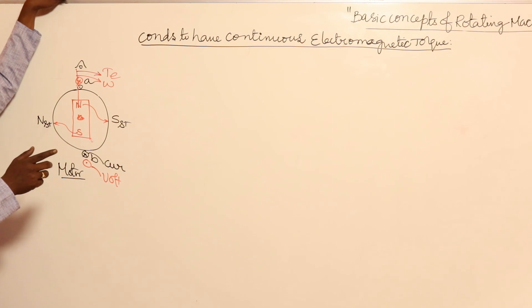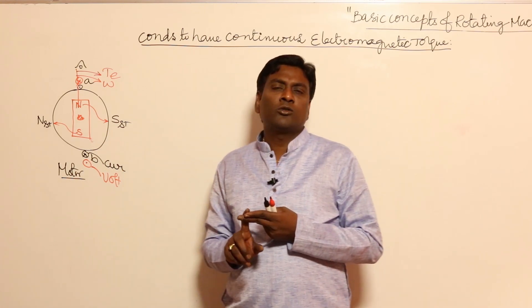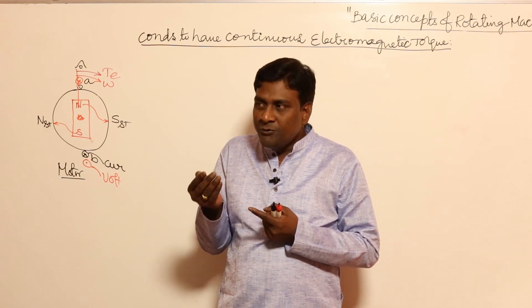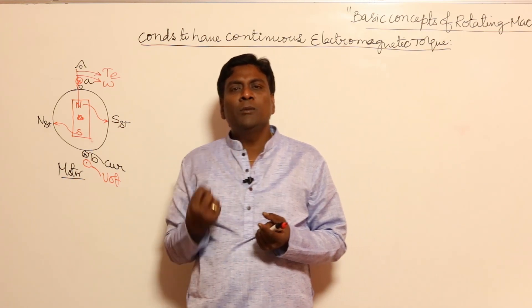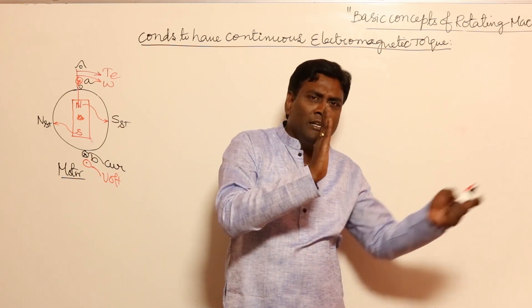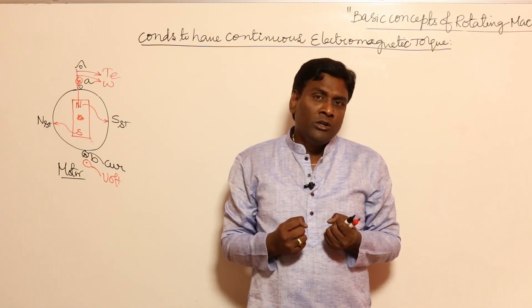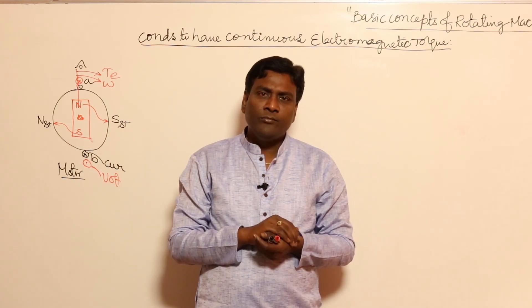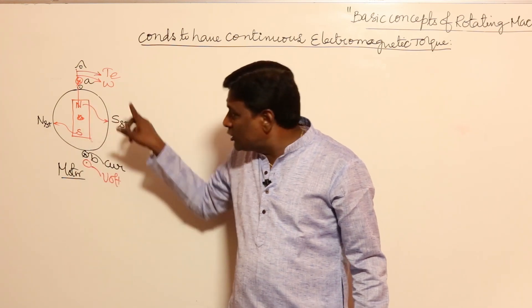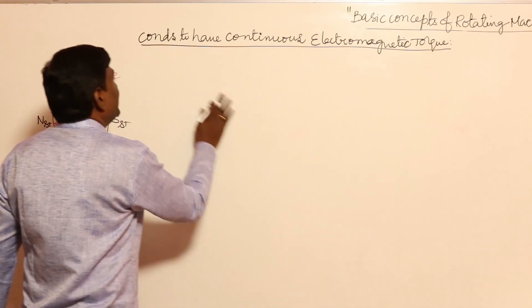In order to have continuous electromagnetic torque - and torque should be there in both motor and generator - in the generator, a back torque will come, and that back torque should be continuous. If torque is not continuous, mechanical power will not be absorbed, meaning electrical power cannot be supplied. So continuously torque should be there. If a generator is trying to rotate in this direction, opposition should be there continuously such that mechanical power will be absorbed. We have to maintain continuous electromagnetic torque. In the motor also, once it rotates, torque will be stopped, but in order to maintain continuous rotation, what are the conditions we have to meet? That is the very important criteria to analyze.